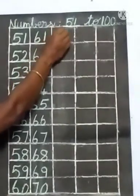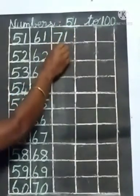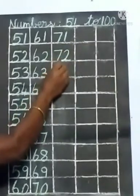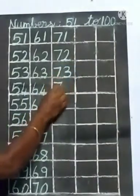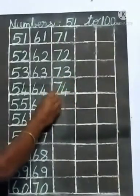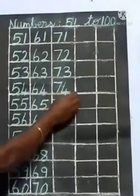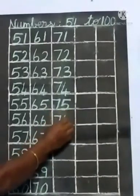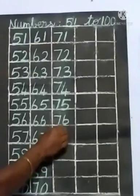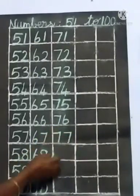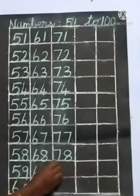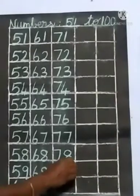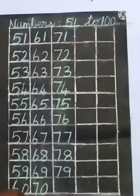Next line. 71, 71 after 7, 2, 72. 72 after 7, 3, 73. 73 after 7, 4, 74. 74 after 7, 5, 75. 75 after 7, 6, 76. 76 after 7, 8, 78. 78 after 7, 9, 79. Next is 8, 0, 80.